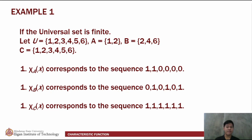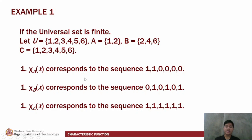If the universal set is finite, and we let U as a set containing the elements 1, 2, 3, 4, 5, and 6, and set A containing the elements 1 and 2, set B containing the elements 2, 4, and 6, and set C containing the elements 1, 2, 3, 4, 5, and 6 — the characteristic function of x on set A corresponds to the sequence 1, 1, 0, 0, 0, 0, since only elements 1 and 2 are in A. For set B, the sequence goes like 0, 1, 0, 1, 0, 1. And for C, since it contains all elements of the universal set, the sequence goes like 1, 1, 1, 1, 1, 1.